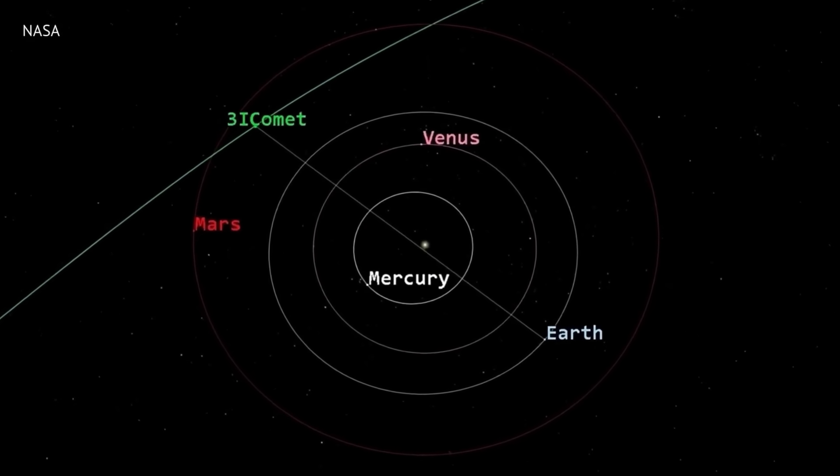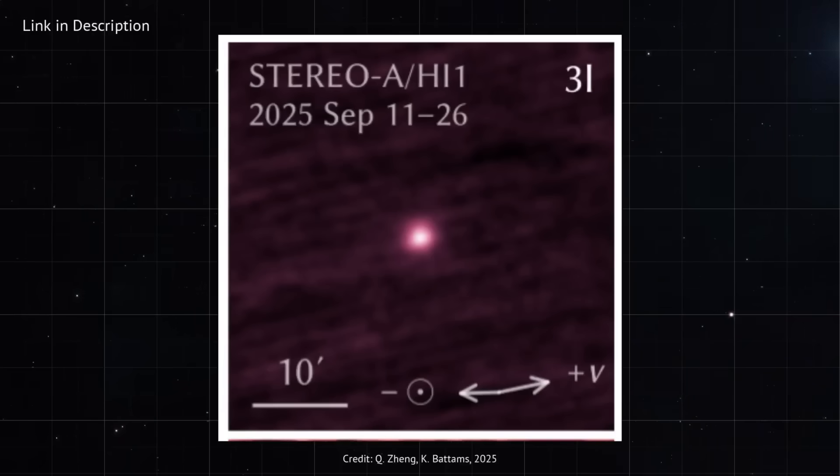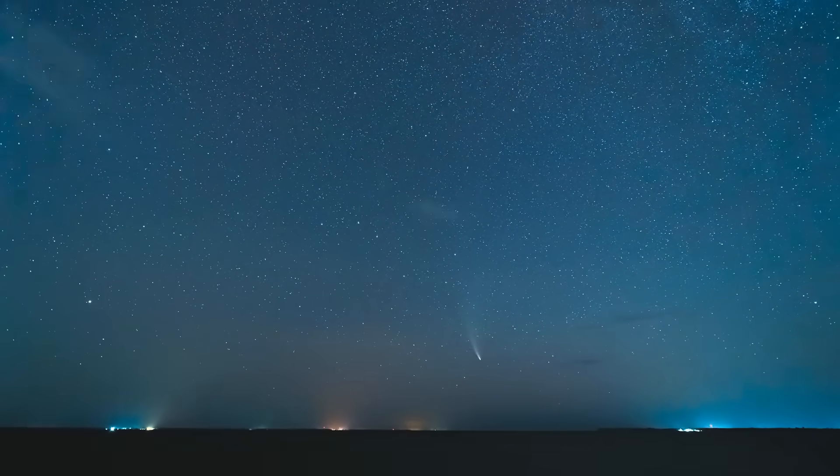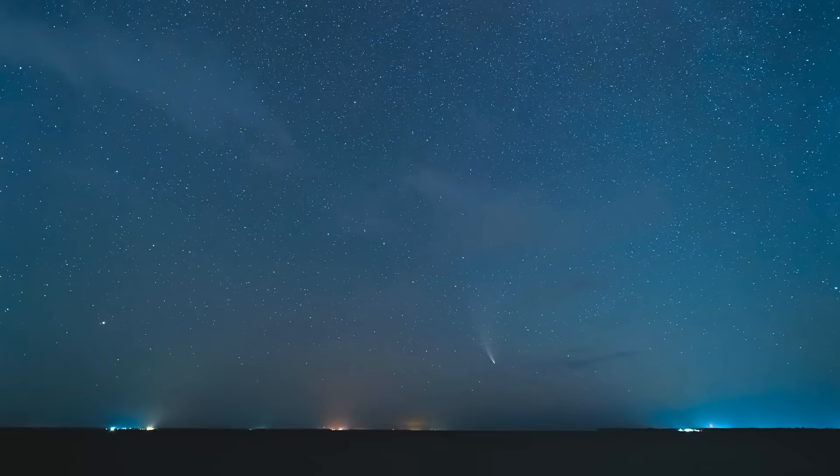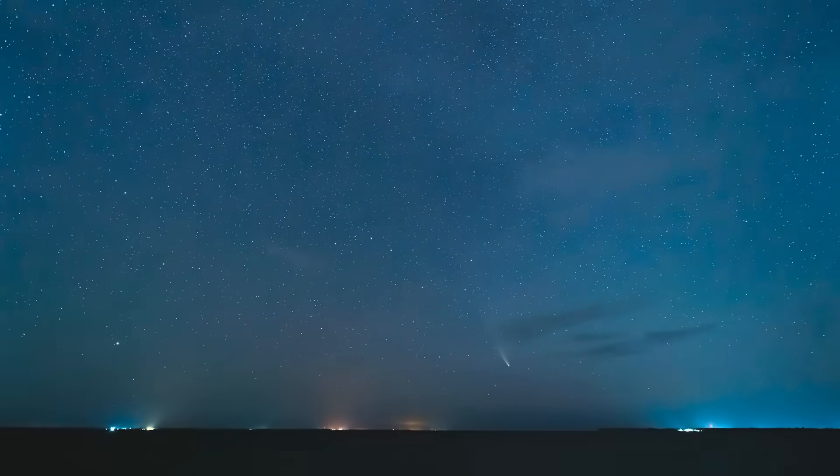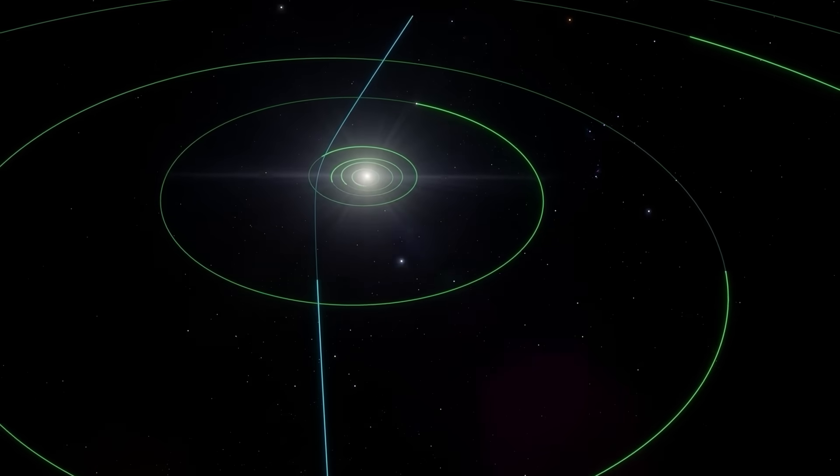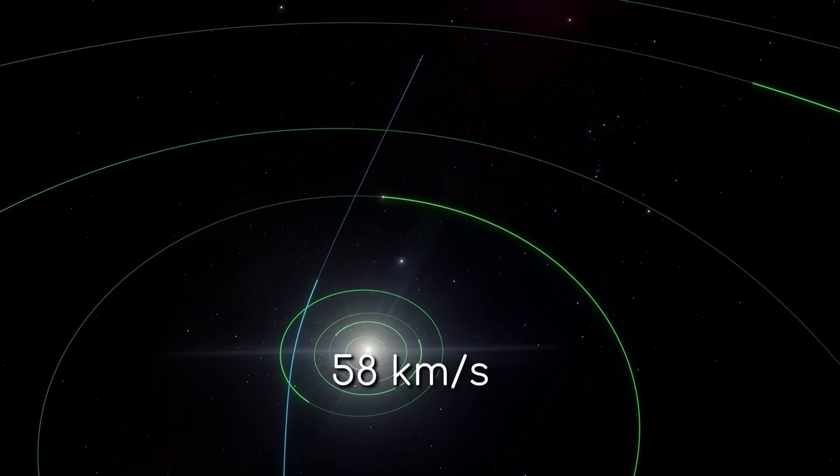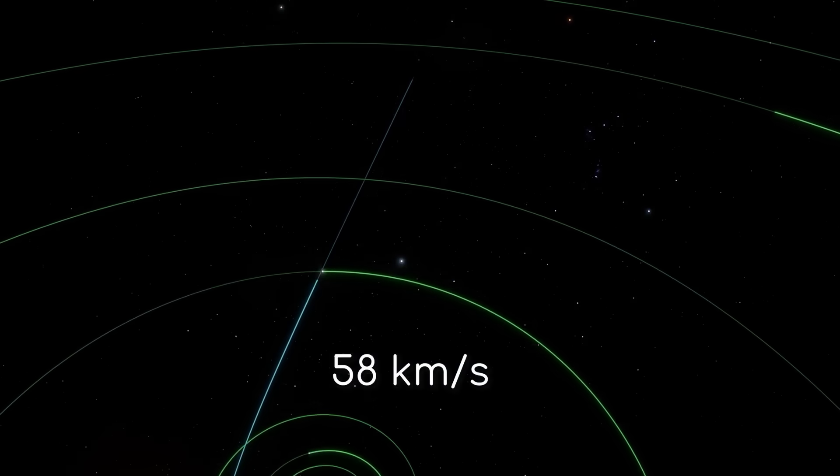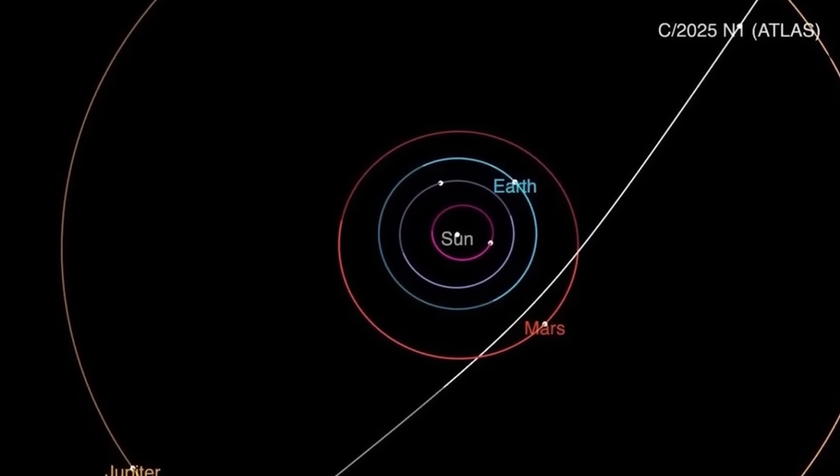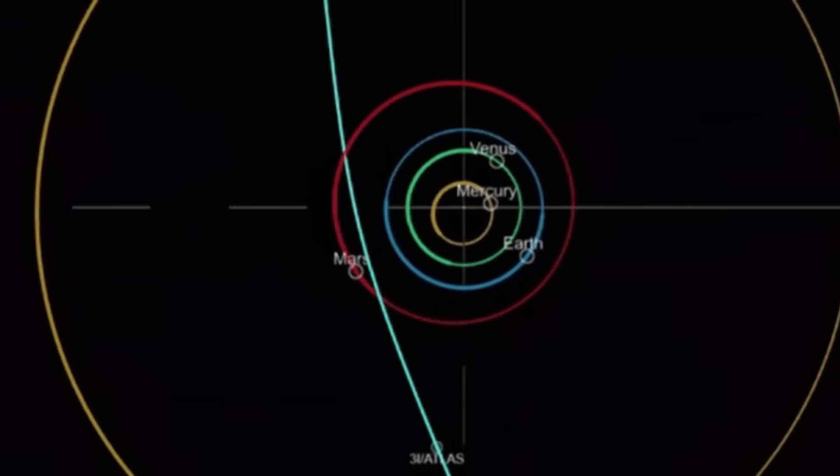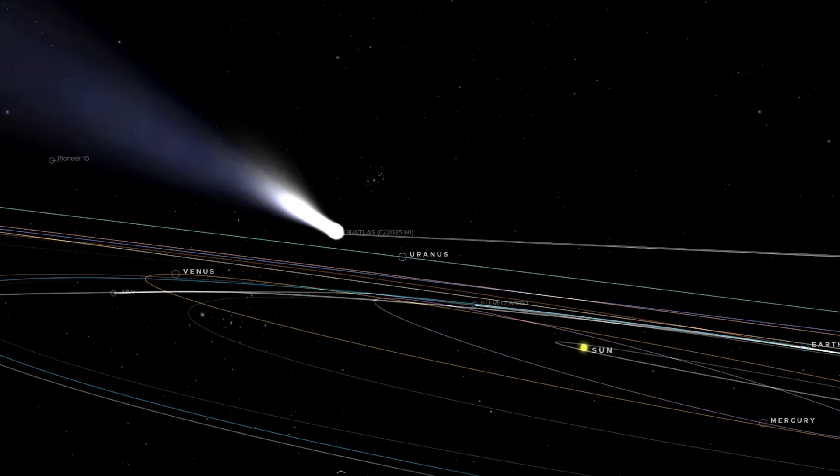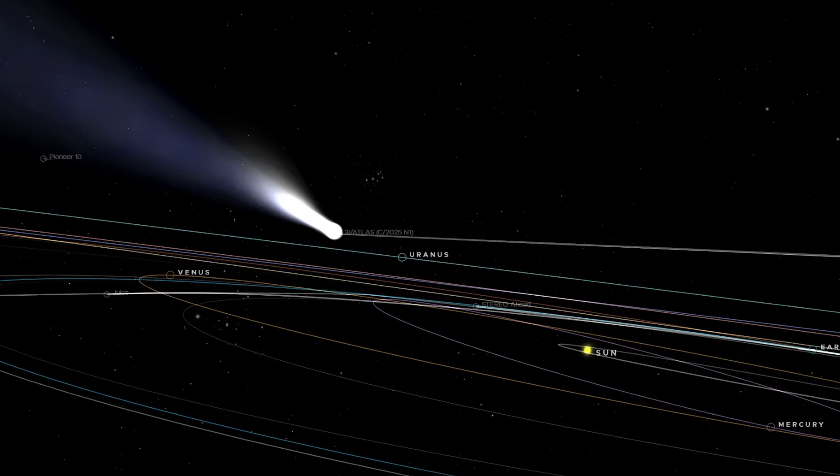There are two explanations. Both fit. And the scary part is, they can both be true at the same time. Option one, a new vent opened. A buried pocket of volatile ice finally hit its breaking point. Pressure built. Burst through. A new jet came online in a different region. If that new jet is strong enough, it can rival or overpower the old one. And the moment that happens, the net push rotates. The orbit changes. The images reorganize. Exactly what we're seeing now.